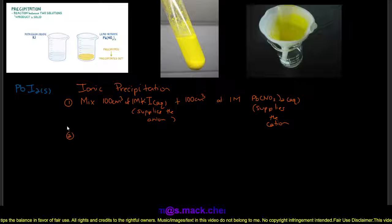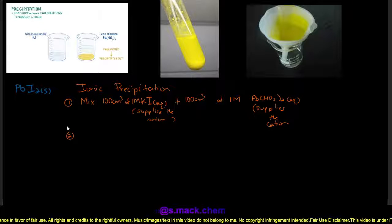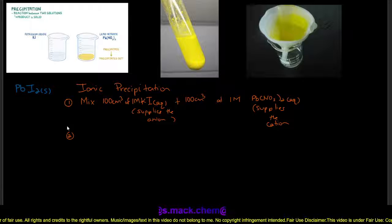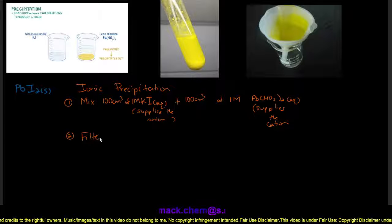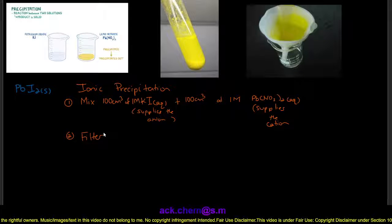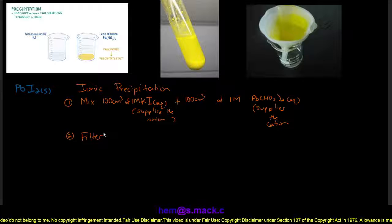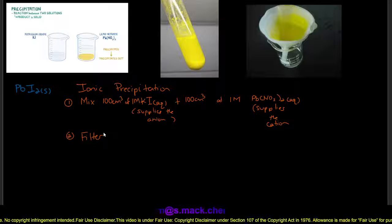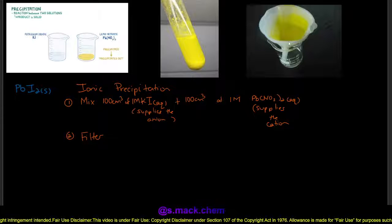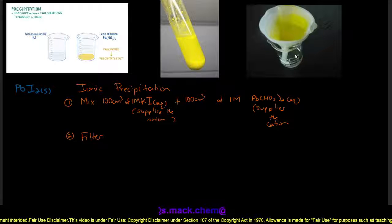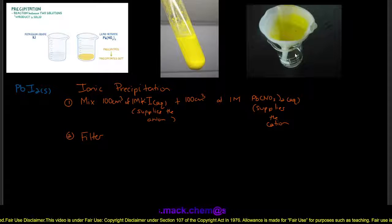In our next step, after having added the two solutions together, we would filter. And this is because on mixing the two solutions together, whether it's with a stirring rod, or just mixing them together by adding them together, lead iodide would form, and this is our insoluble salt. Our insoluble salt having formed, we would need to filter, as seen in the third diagram here, and we filter in order to obtain the lead iodide.